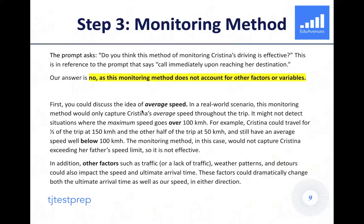First, you could discuss the idea of average speed. In a real-world scenario, this monitoring method would really only look to capture Christina's average speed throughout the trip. It doesn't tell us about whether she violated that maximum threshold for a certain component of the trip, because we're only looking at an average. So it probably would not detect situations where the maximum speed goes over 100 kilometers per hour.